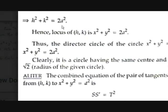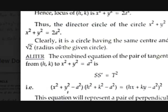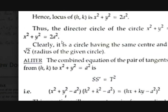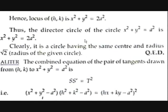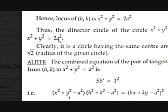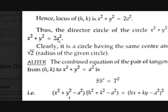Since (h, k) is the point and is equivalent to (x, y), the director circle of x²+y²=a² is x²+y²=2a². Observe that this is a circle with the same center but with radius √2 times the radius of the given circle, since 2a² = (√2·a)².